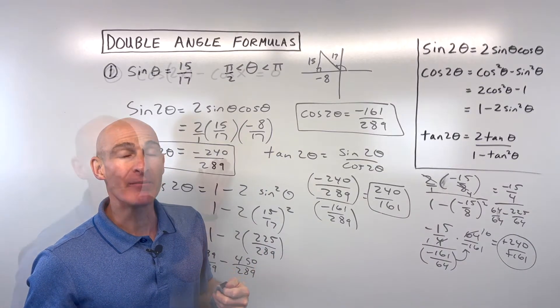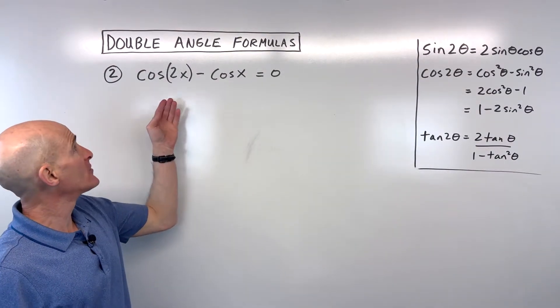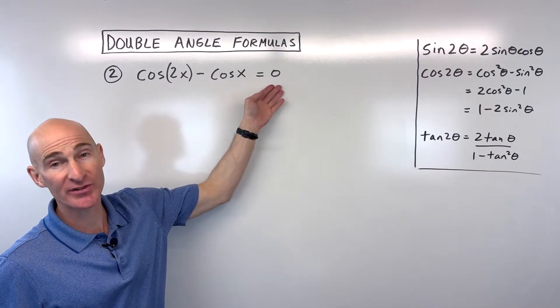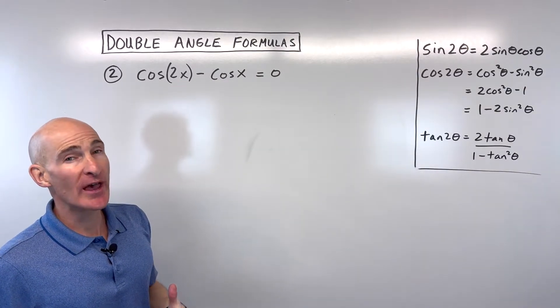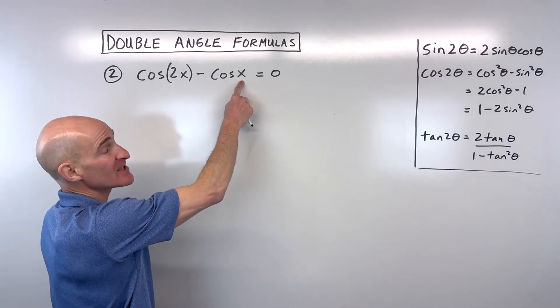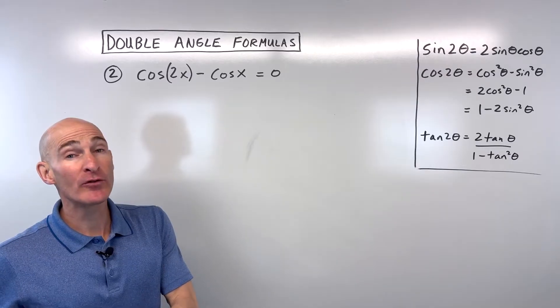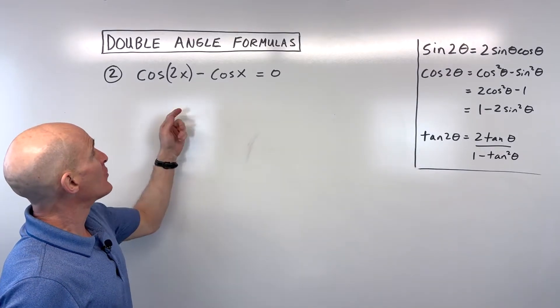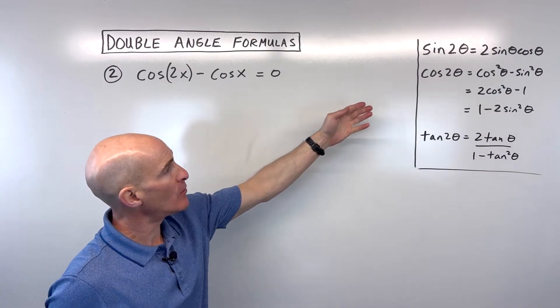Let's take a look at another example. For number two, we want to solve this equation cos 2x - cos x = 0. The challenge here is that we've got this double angle and this single angle. Wouldn't it be great if we could get everything in just terms of 1x, just a single angle? So that's what we're going to do.